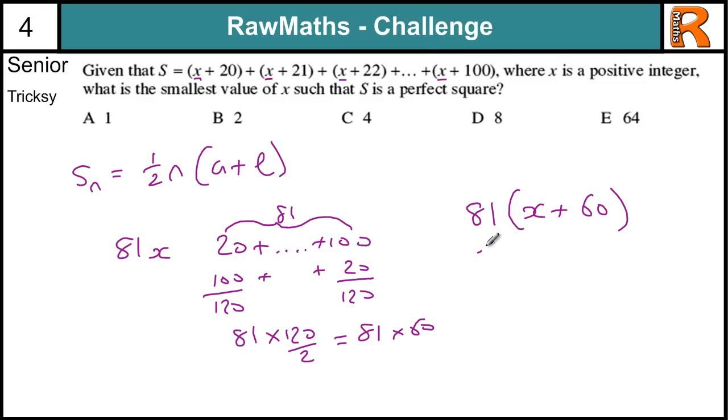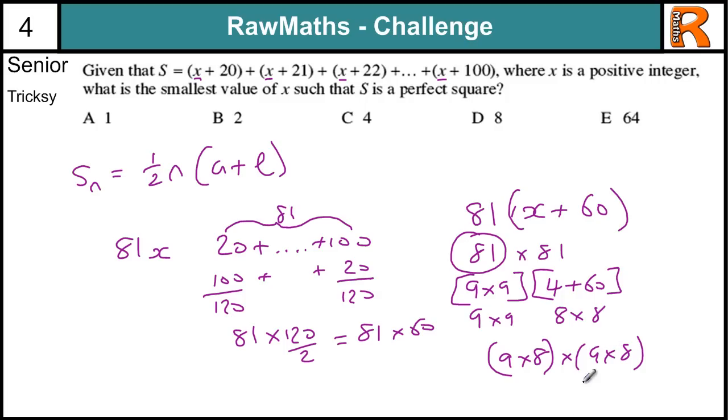Initially you might be thinking, well, 81 times 81 is a perfect square because it's times by itself. But 81 itself is already a perfect square. So that's 9 times 9. So long as we have a perfect square here to multiply it by, then we can pair off the two numbers and then we get another perfect square. So as long as this is a perfect square times another perfect square, you get a perfect square. So the smallest number x can be is 4 because 4 plus 60 is 64. And 64 is 8 times 8. And we've got 9 times 9. And that's a perfect square because we have 9 times 8 times 9 times 8. And whatever that is, it's a perfect square. So the answer is 4C.